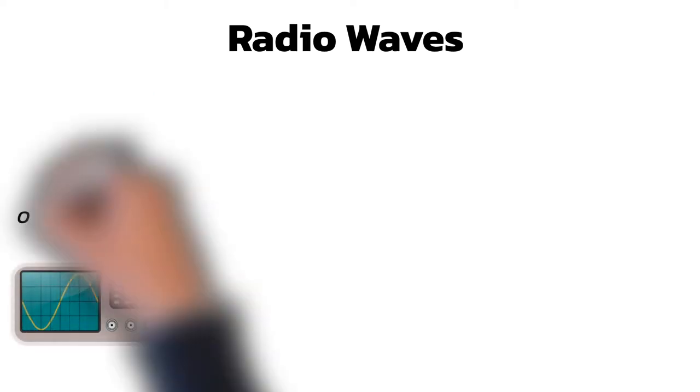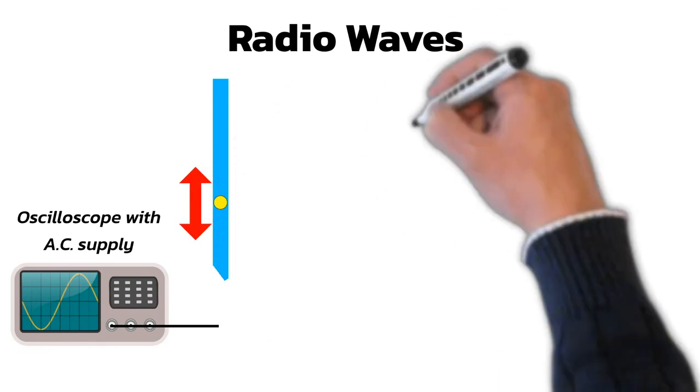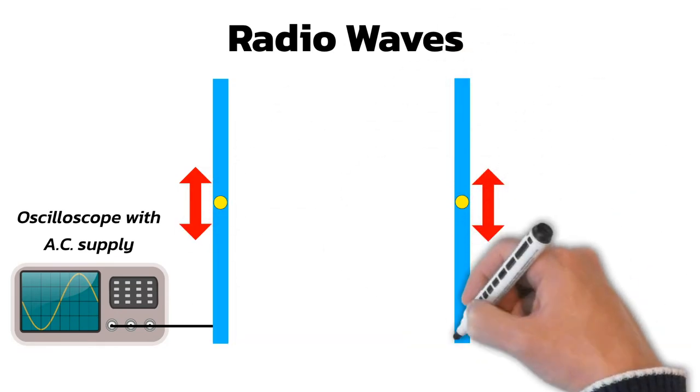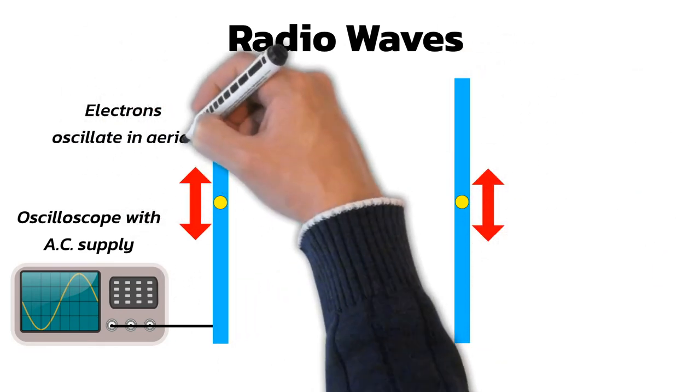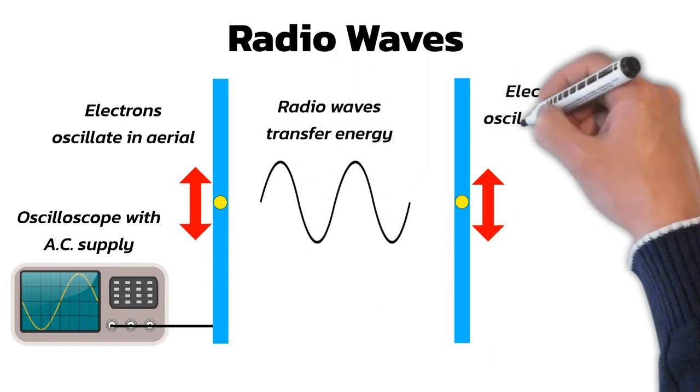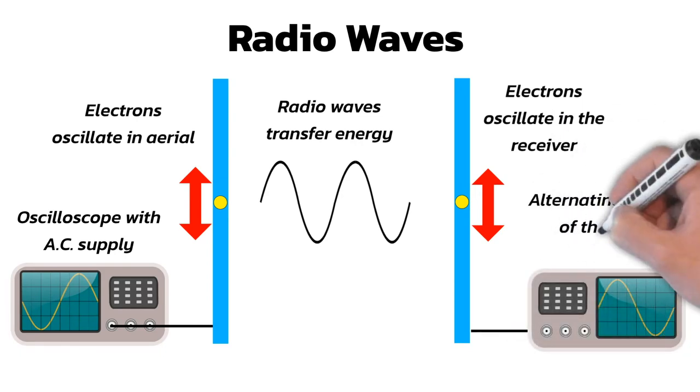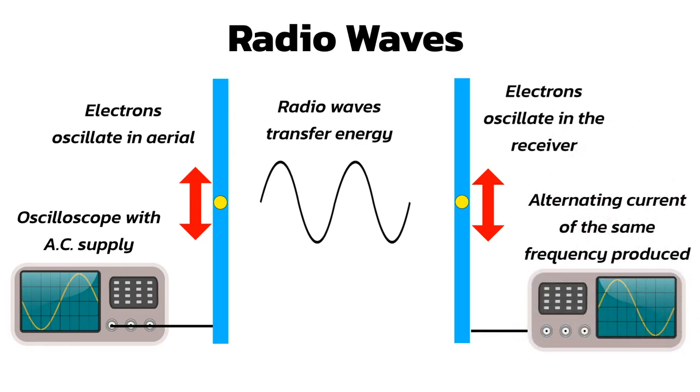Radio waves are produced when electrons oscillate in an aerial. An AC or alternating current, shown on the oscilloscope, causes the electrons to oscillate which produces a radio wave of the same frequency as the AC supply. When the waves reach the receiver, they cause the electrons to oscillate, which produces a current of the same frequency as the original signal.